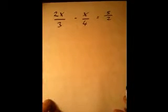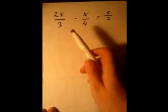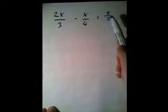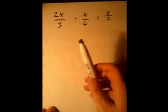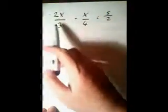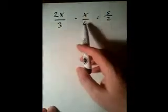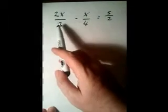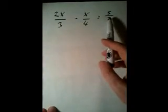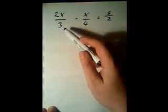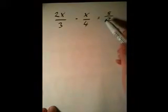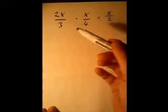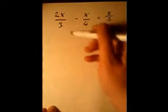The final example is a slightly more complicated one — in this case we have three fractions involved. Your first instinct might be to multiply by 3 to get rid of that denominator, but that doesn't help with the 4. So we need to think of the lowest number that all of these denominators will divide into — in other words the lowest common multiple. The lowest such number is 12, so we multiply everything by 12.